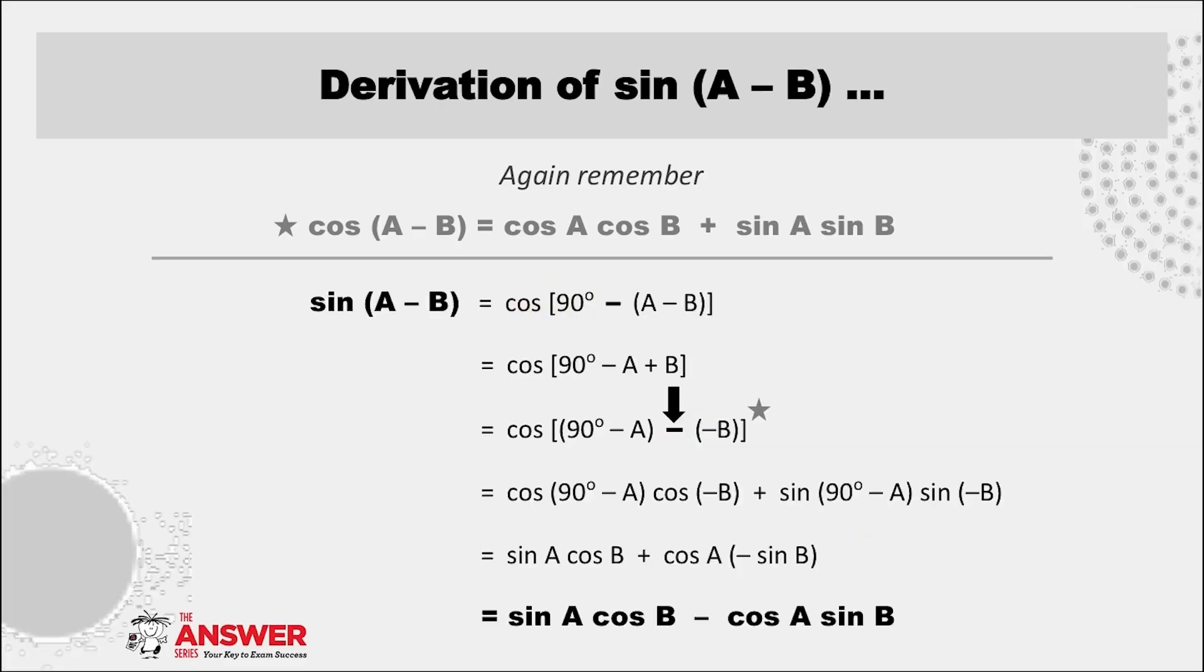For sin(A - B), we take a very similar approach in the beginning. Just watch the signs very closely. Again, we have to create a minus here, which means we need to make B negative. We now have cos of the difference between two angles, and so we expand according to its formula.